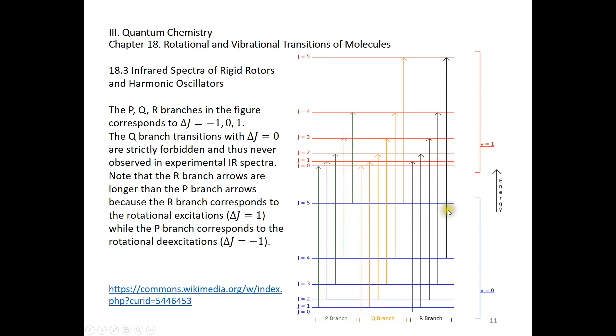Both R branch and P branch can be observed in a high-resolution infrared spectrum. Now let's look at the Q branch in the middle. The Q branch also has a vibrational transition from n equals 0 to n equals 1, but the change of J is from 0 to 0, 1 to 1, 2 to 2, 3 to 3, 4 to 4, and 5 to 5. So Q branch is never observed in the experimental infrared spectrum of a diatomic molecule.